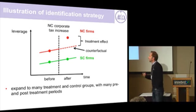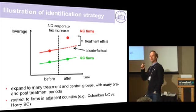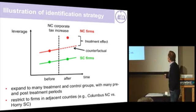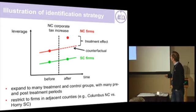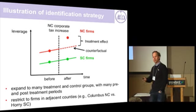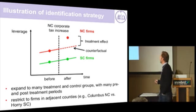We then go back and restrict treatment and controls to be in adjacent counties that straddle a state border, so that one county lies in a state that has had a tax event and the other county has not. In the case of this simple example, this would be Columbus County in North Carolina and Horry in South Carolina. We do that for all the possible events we see in our data.